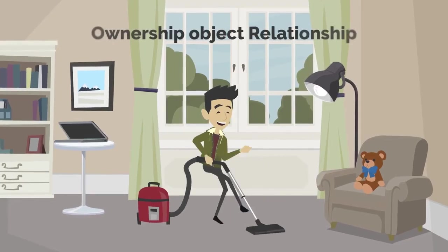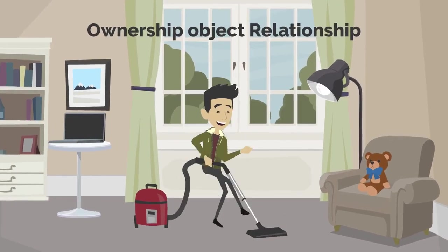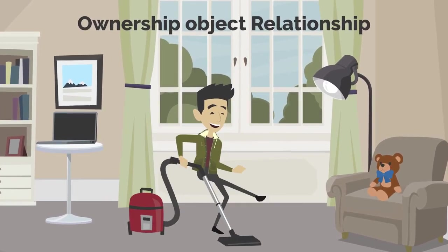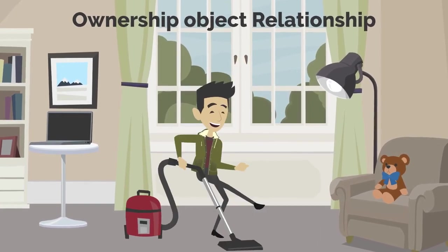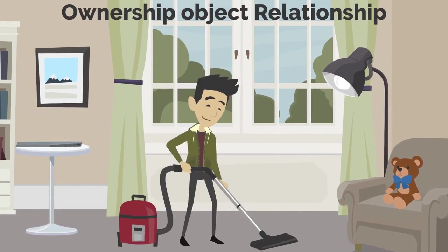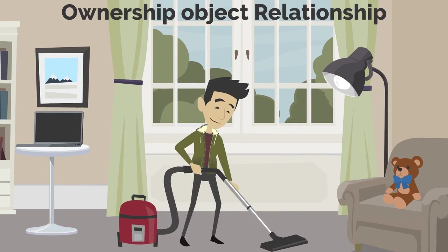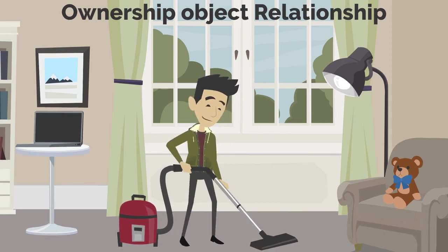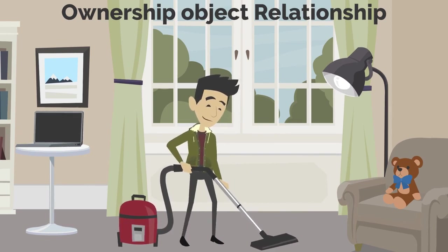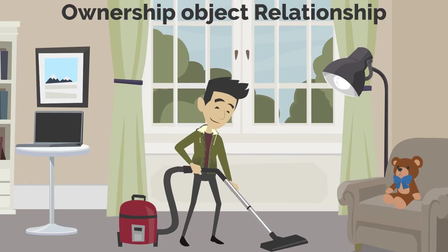Ownership-object relationship: the relationships among objects that belong to the same person. For example, laptops, mobile phones, smartwatches, and game consoles held by an owner.